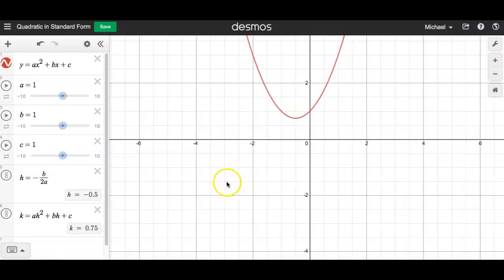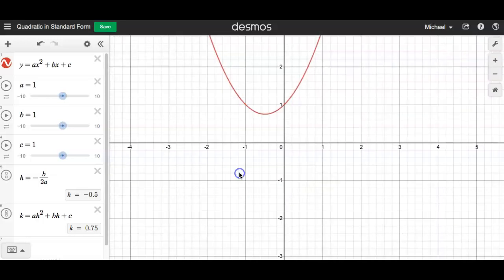Also, if you notice the way I did this, I think I made a link right to this page if you want to use it. As I change these things, you see how the h and the k down here, it's changing. I can identify the vertex like that.